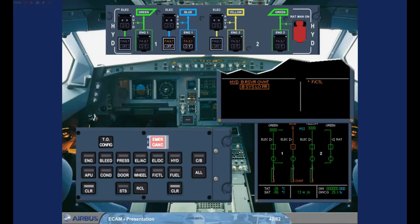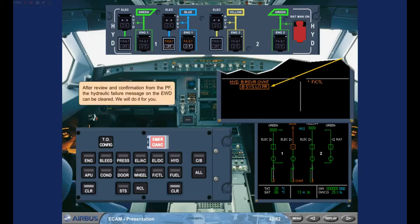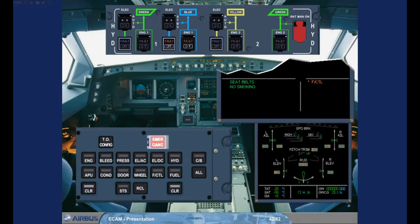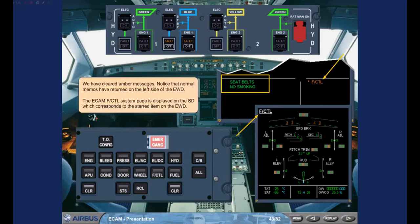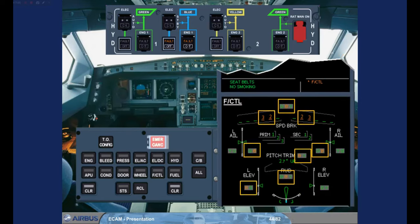After review and confirmation from the pilot flying, the hydraulic failure message on the Engine Warning Display can be cleared. We have cleared the amber messages. Notice that normal memos have returned on the left side of the Engine Warning Display. The ECAM Flight Control System page is displayed on the SD, which corresponds to the star item on the Engine Warning Display. On the ECAM Flight Control page, notice that the controls affected by the loss of blue hydraulics have amber indications. These indications will be discussed in the hydraulic and flight control modules.